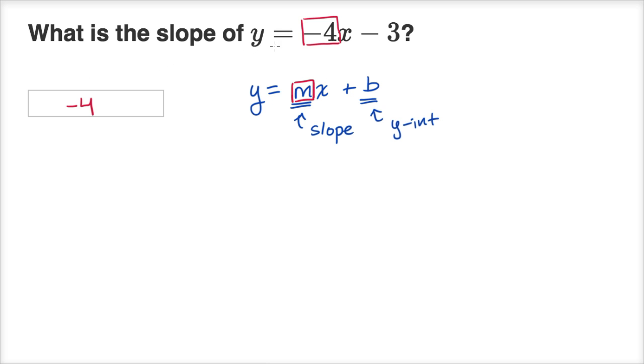Now just as a reminder, you have to make sure that it's solved in this way, that it is solved for y. y is equal to something times x minus three. So that's our slope. Let's do another one of these.